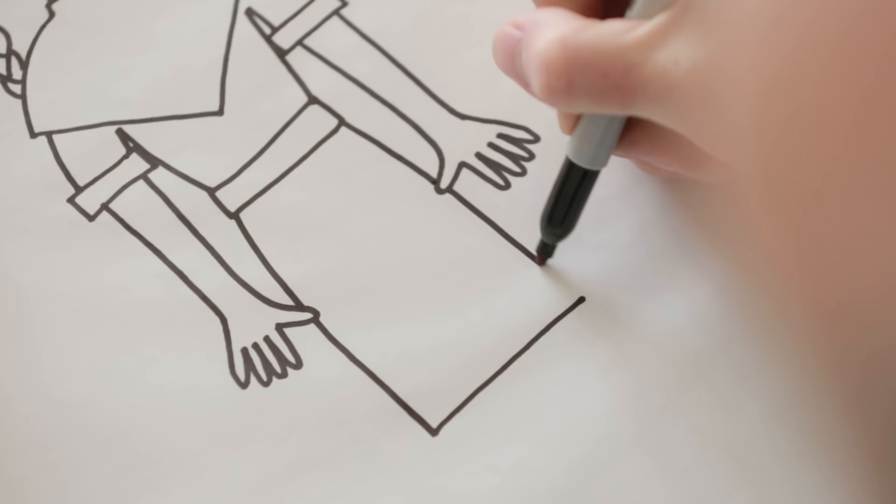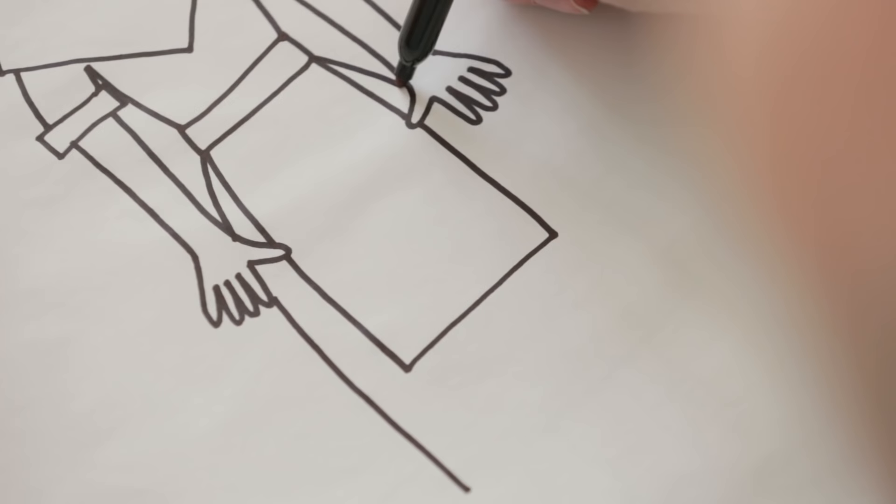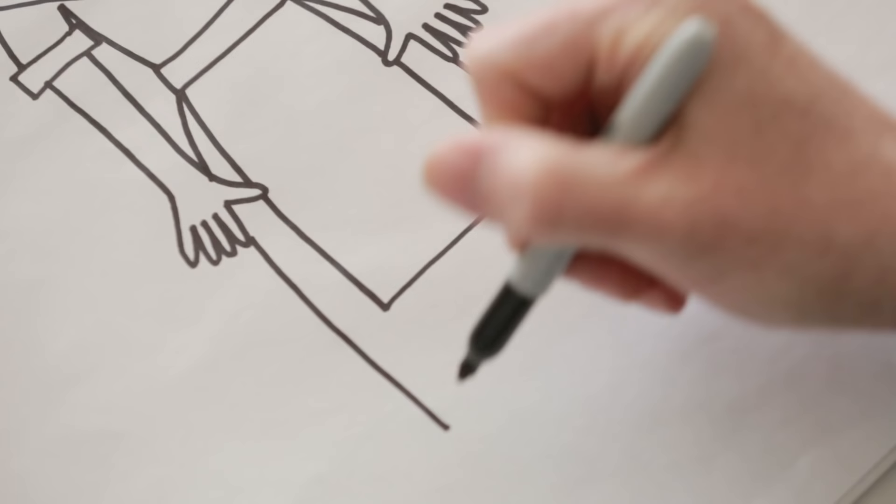And the next thing to draw is her skirt. It's quite a long skirt. It comes down to her calves, I think. So, two lines coming down like that and the bottom of the skirt.